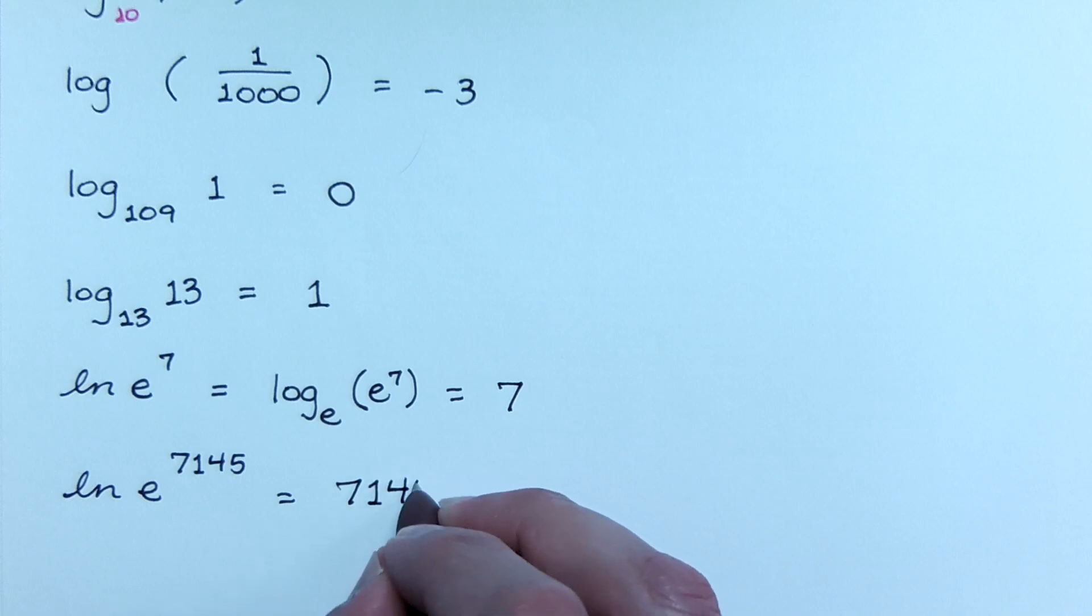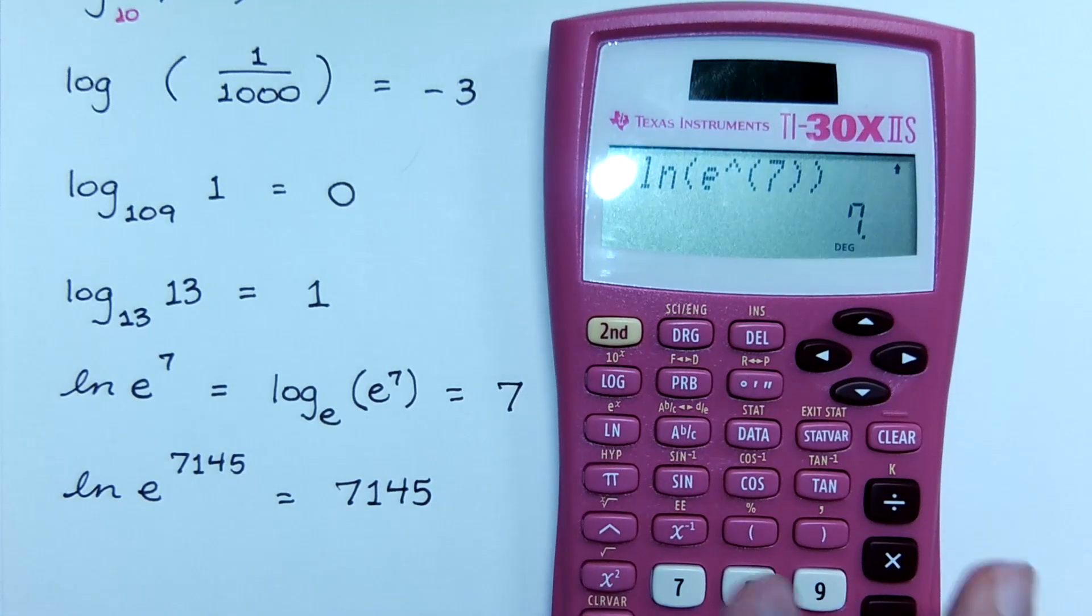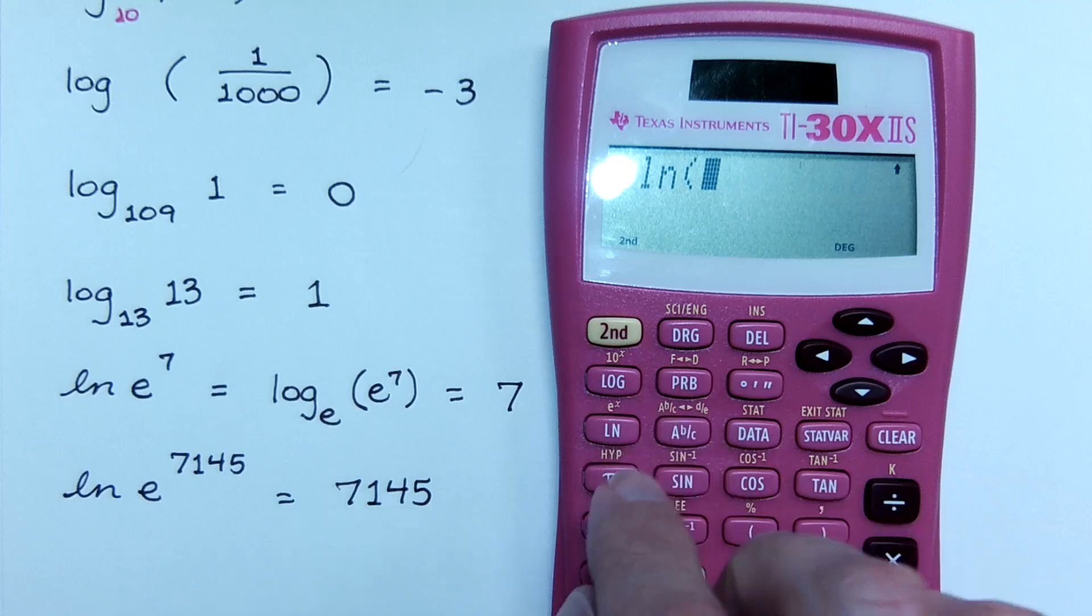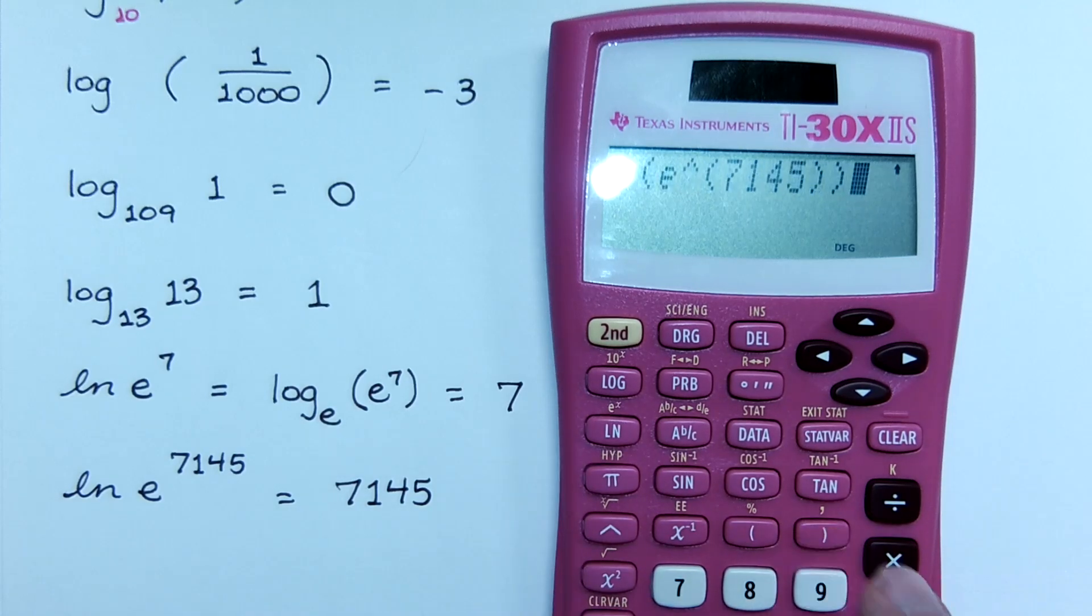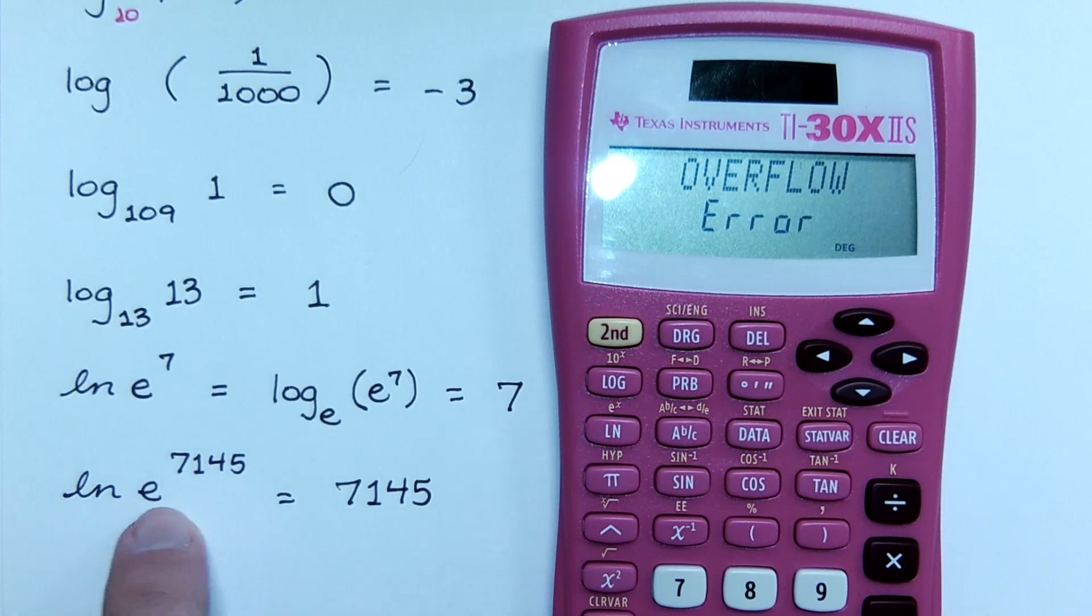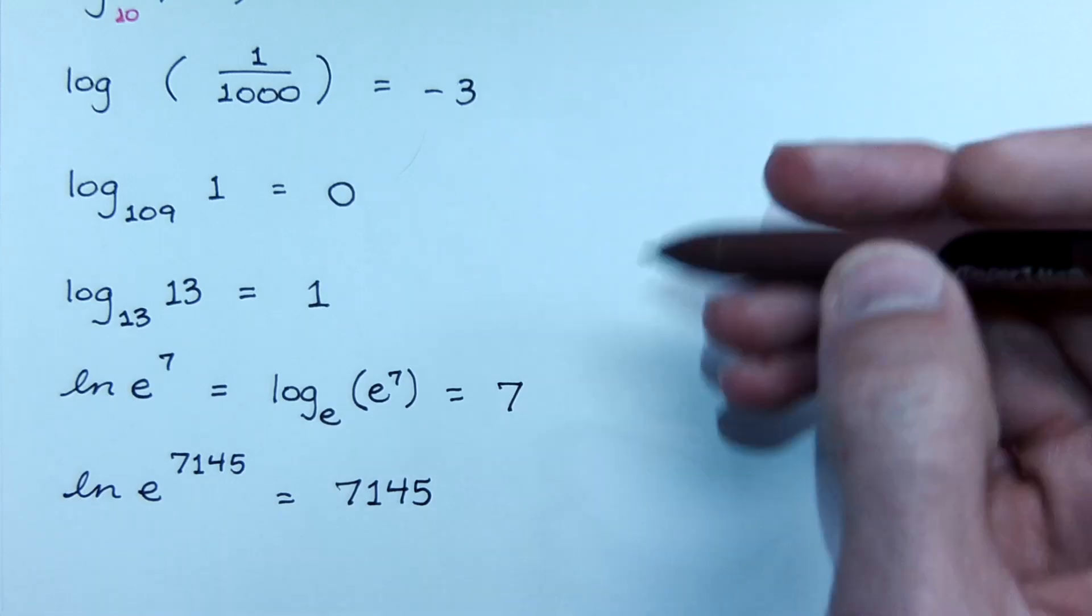And this is where I just laugh at you guys for not paying attention to anything that I tell you. Because if you come over here to the calculator, like I know you guys love to do, and you go natural log of E to the 7,145. Let's see what your calculator says. The number's too big for it to handle. Because it's going to try to evaluate this power first before applying the natural log. That's too much. But you know what? We didn't need a calculator because we were that good.